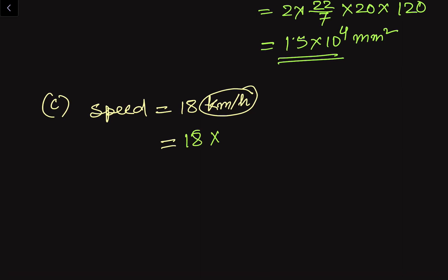So 18 kilometer per hour: in 1 kilometer we have 1000 meter, and per hour means it is in the denominator. 1 hour has 60 minutes and 1 minute has 60 seconds, so 1 hour has 3600 seconds in the denominator.